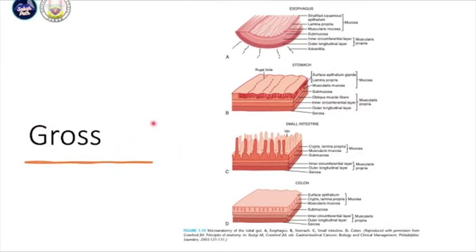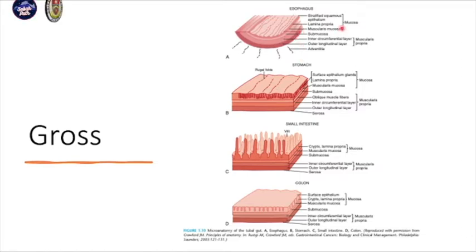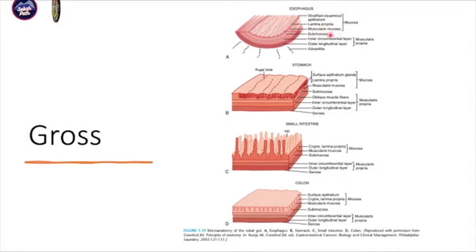For the gross appearance of the gastrointestinal tract, I will explain from the esophagus to the colon. From the esophagus, you have the mucosa, which is composed of stratified squamous epithelium, lamina propria beneath the stratified squamous epithelium, and muscularis mucosa and submucosa beneath the mucosa. Beneath the submucosa you have the muscularis propria, and the outermost layer is what we call the adventitia.